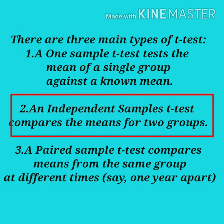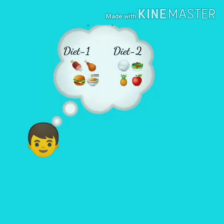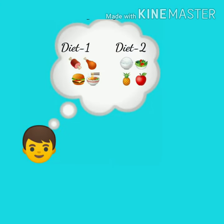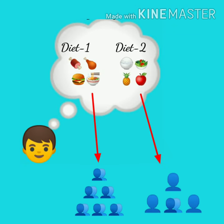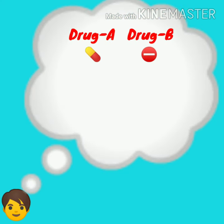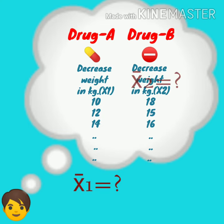An independent samples t-test compares two sample means to determine whether the population means are significantly different or not. It is also known as the independent t-test, independent measures t-test, independent two-sample t-test, or simply two-sample t-test. It is commonly used to test the statistical differences between the means of two groups, two interventions, or two change scores.